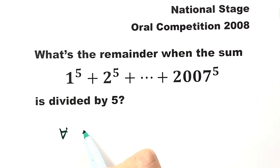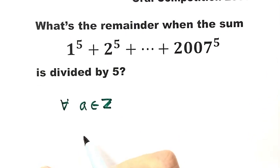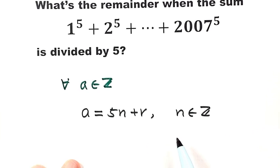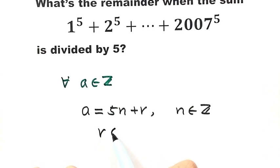For any integer a, we can put a as following: a equals 5n plus r, where n is an integer. Then r belongs to this range, just 0, 1, 2, 3, or 4.